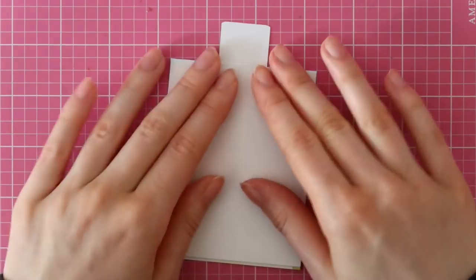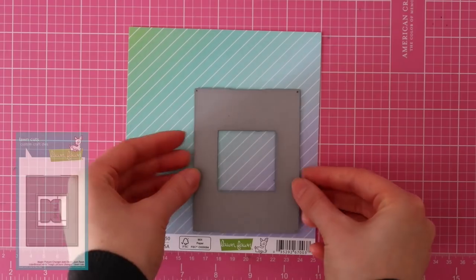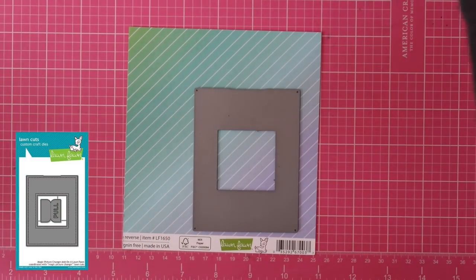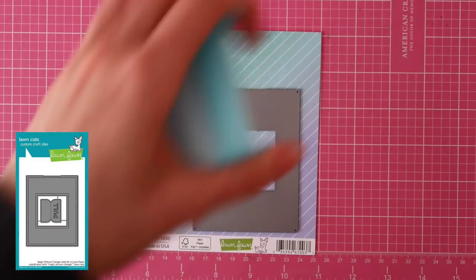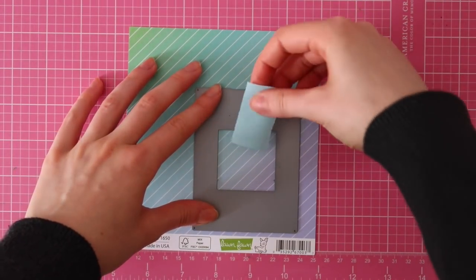So now that I inserted those tabs into the slots, I flipped over my slider card and then I adhered the moving piece between the two tabs. I removed the adhesive backer sheets and then I closed it all up.